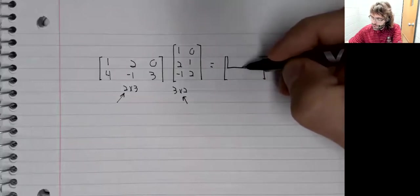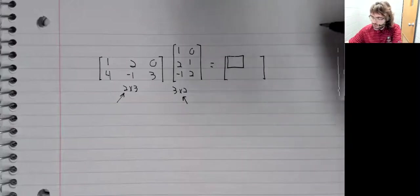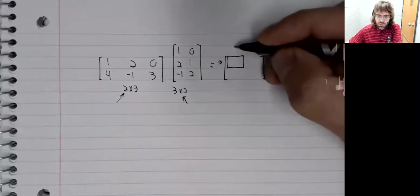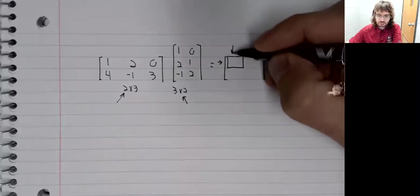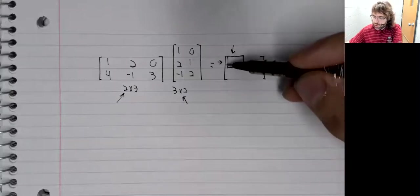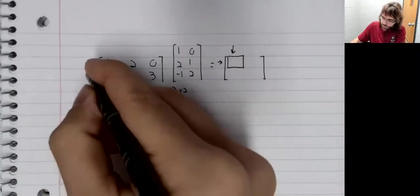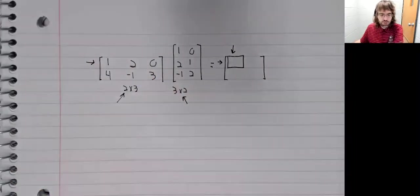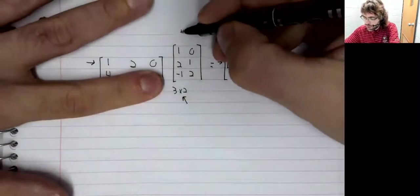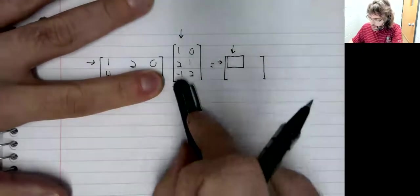We're going to have a number appear in the first row and the first column. And to get the first row, first column, we'll take the first row here and the first column here.